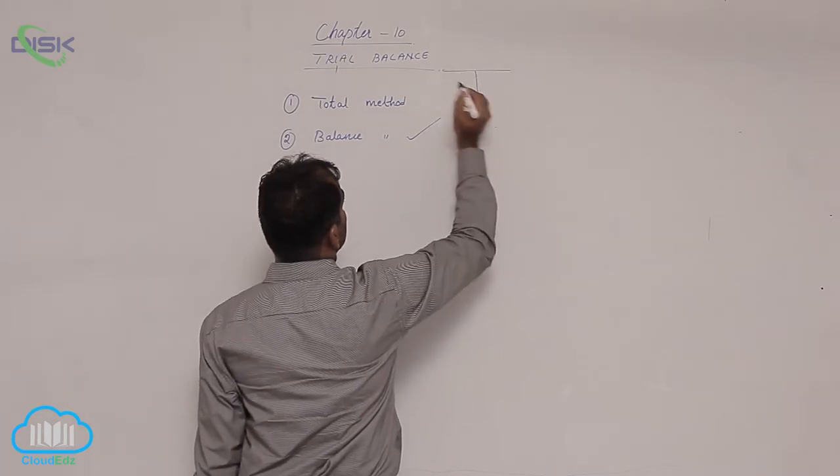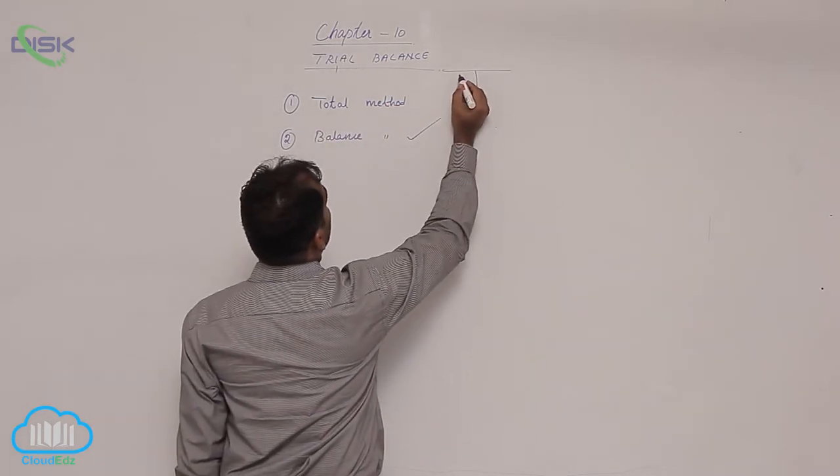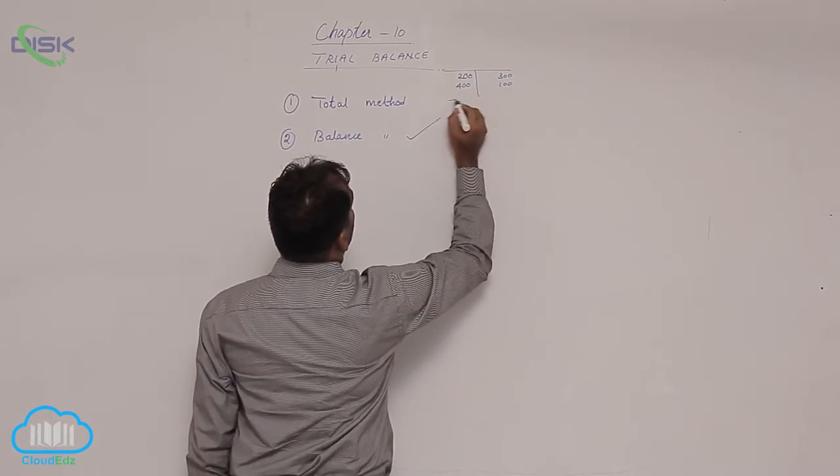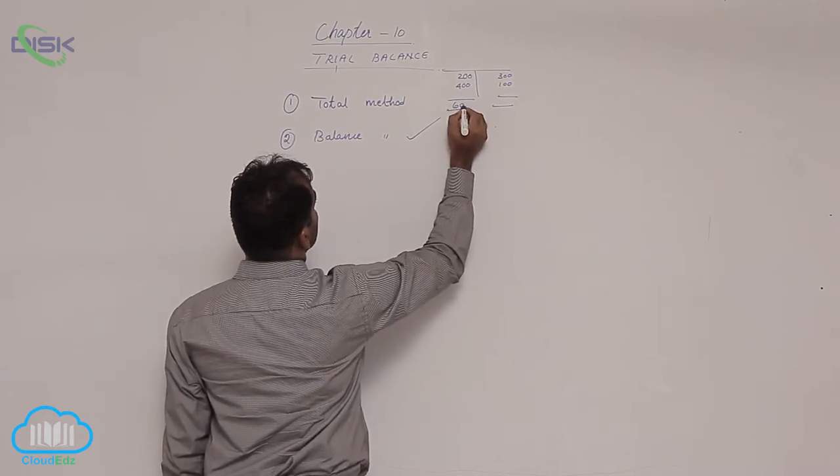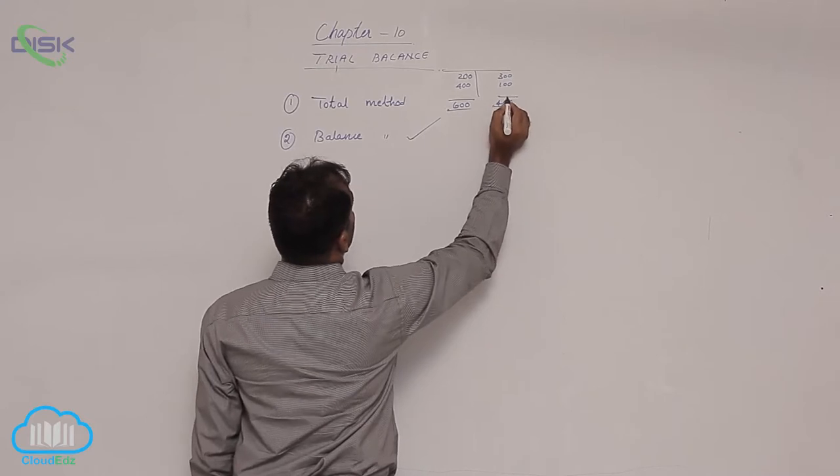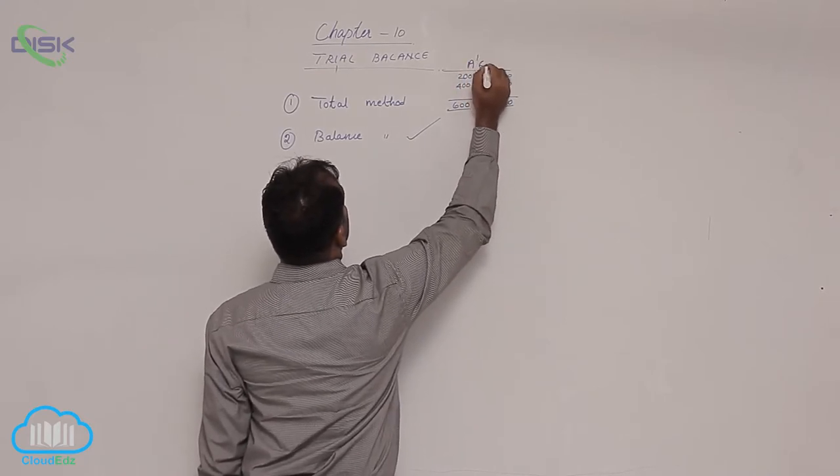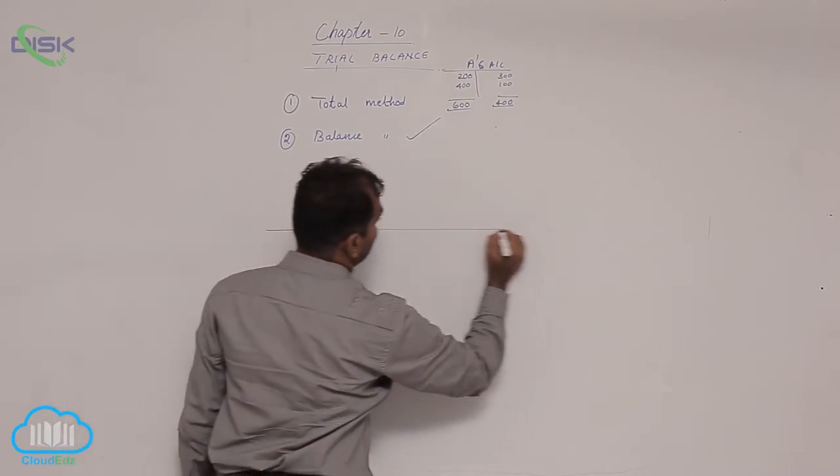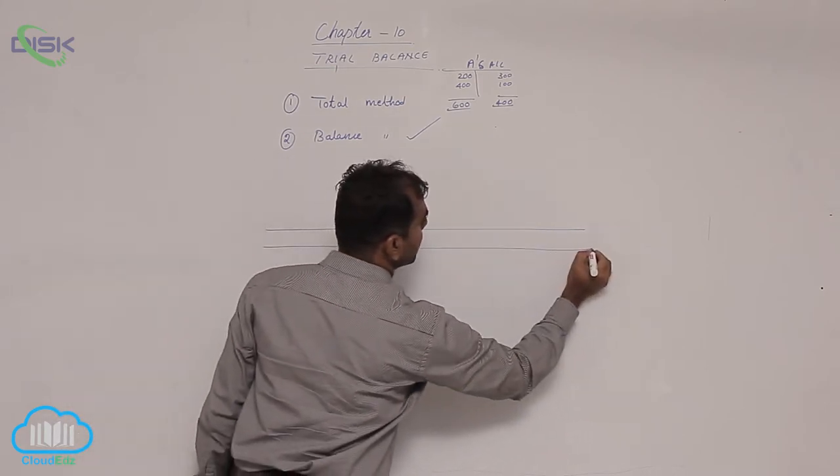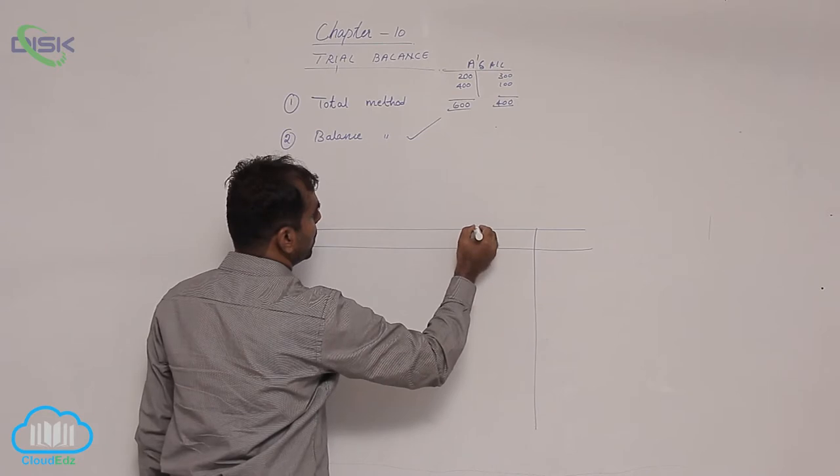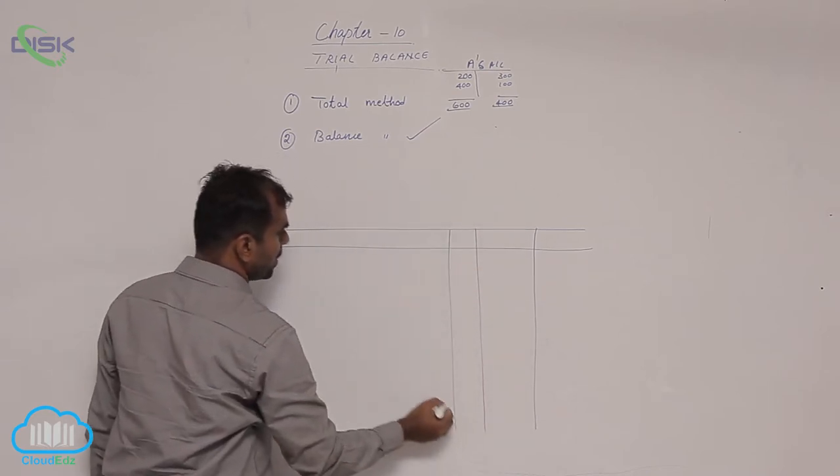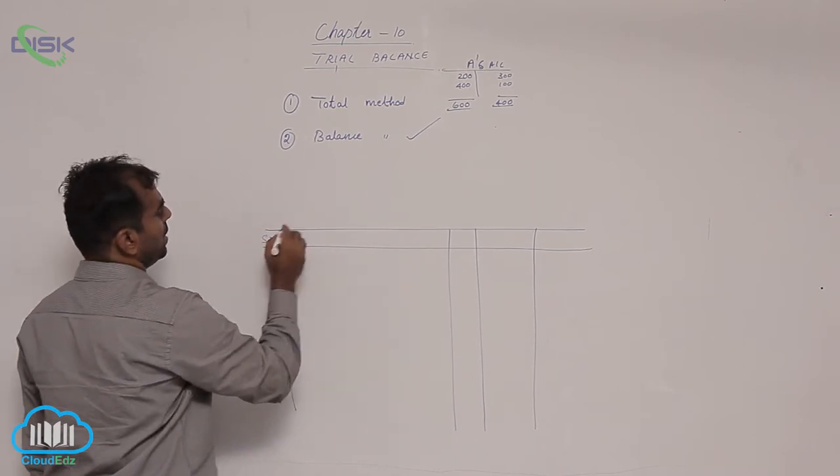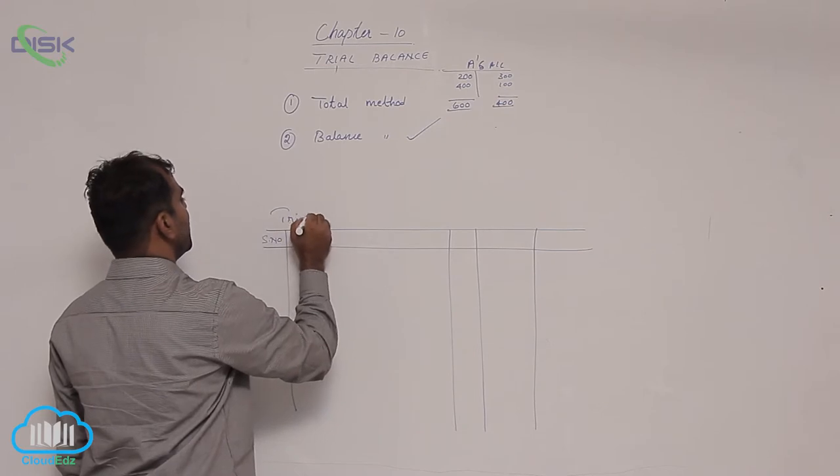What is total method? For example, you all know a ledger is T-shaped statement. There are some amounts on debit side, some amounts on credit side. If I total simply the debit side, here it is 600, here it is 400. Let us assume this is A's account. So if I have to prepare trial balance, I would be taking a statement with amount columns. This is your LF column, this is your serial number. This is the format of trial balance.